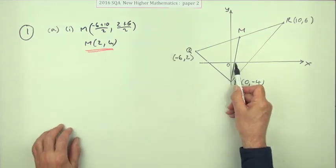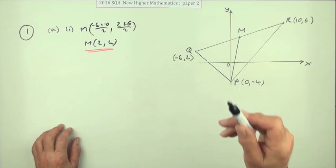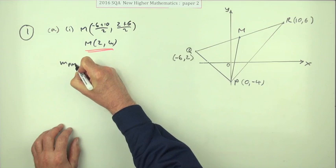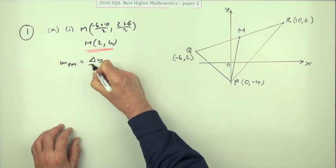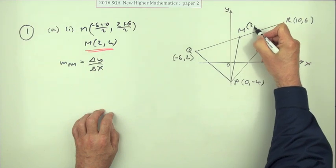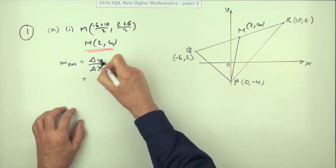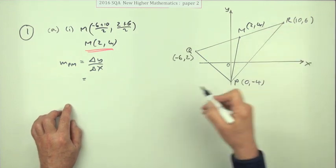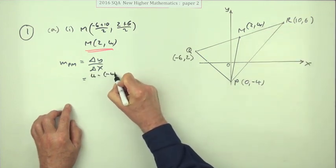Now to get the equation of this line, you would need its gradient, and that's why you had to have both of those points. So I need the gradient of the line PM. That'll be the difference in the Y coordinates over the difference in the X coordinates. I think I'll just put this in here, Y2 minus Y1, X2 minus X1 if you like. So the difference in the Y coordinates, 4 take away negative 4, maybe I'll just spell it out.